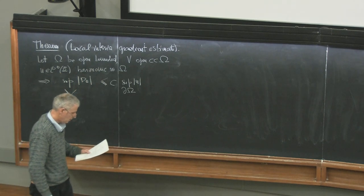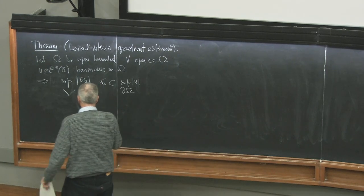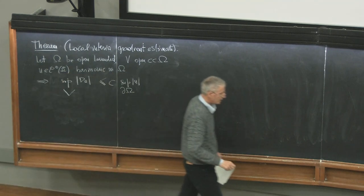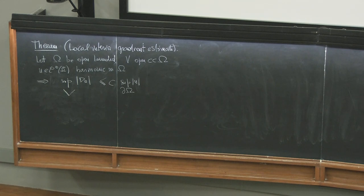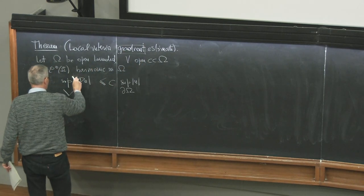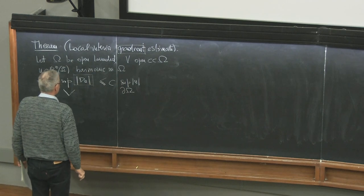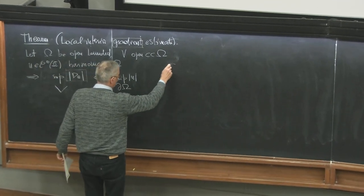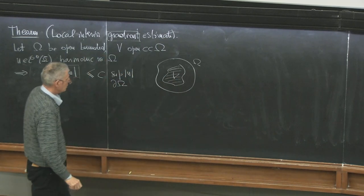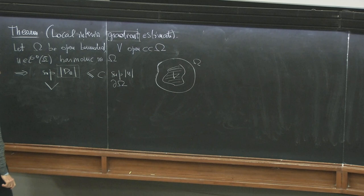These are called the local interior gradient estimates — 'gradient estimate' because it's an estimate on the gradient. The gradient is bounded above by u itself on the boundary. We are doing the estimate of the gradient inside, not on the boundary of omega — so these are interior estimates.